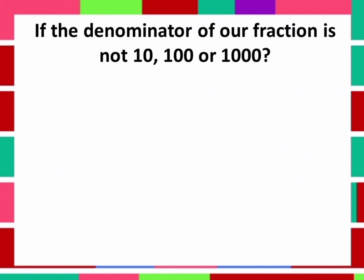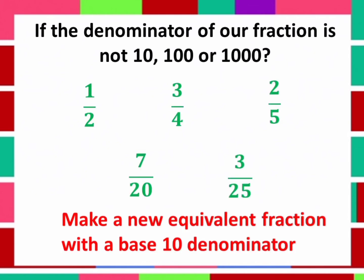And if the denominator of our fraction is not 10, 100, or 1000 — like the examples given — make a new equivalent fraction with a base 10 denominator. Find a number you can multiply the denominator by to make it 10, 100, or 1000, so it's easier to convert to decimal.